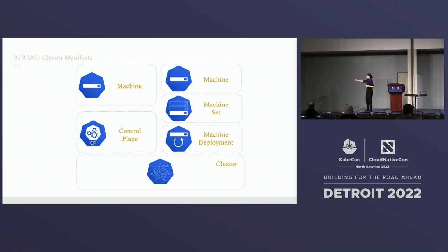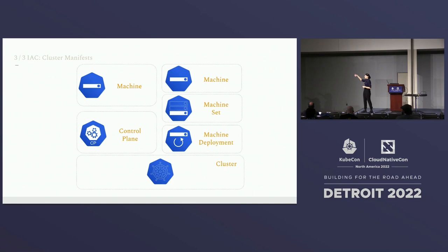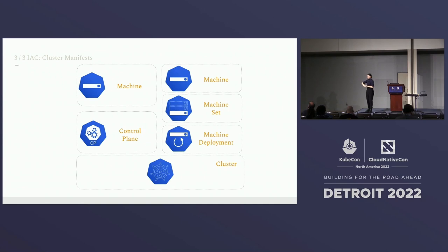Using all of these custom resource definitions, we can say we want a cluster with 10 nodes — three of them being the control plane and seven in the data plane — and specify where we want to deploy, for example to Azure, along with all the networking and security controls. So this becomes your infrastructure as code. Instead of using Terraform or Ansible, it's going to be YAML — you're in the Kubernetes world.